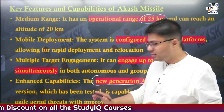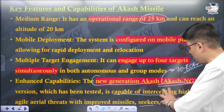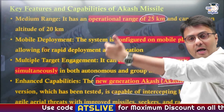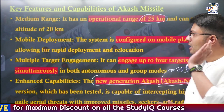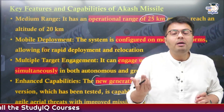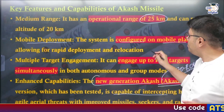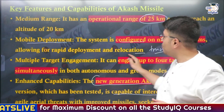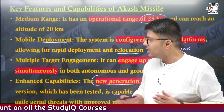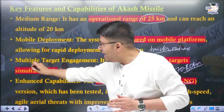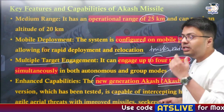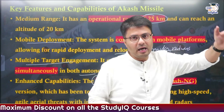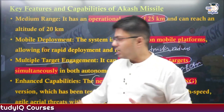The newer generation Akash systems have better seekers and radar systems which help target aerial threats more effectively, and they can travel much farther. They can be deployed anywhere — configured on mobile platforms, be it trucks, railways, or ships — and can be relocated as needed during wartime. Most importantly, the Akash can engage multiple targets simultaneously, up to four targets, which can be done in autonomous or group modes. It can effectively target more than one aircraft system or even swarms of drones.